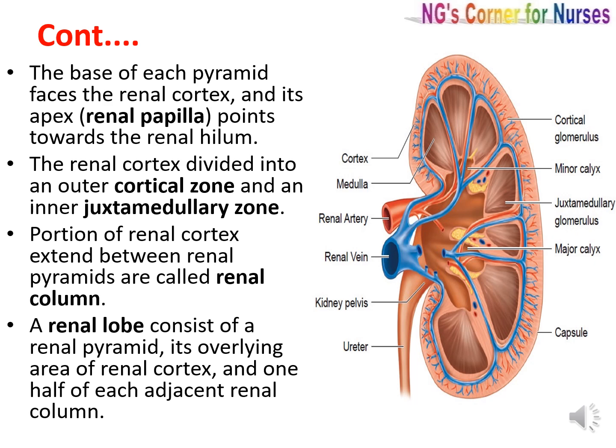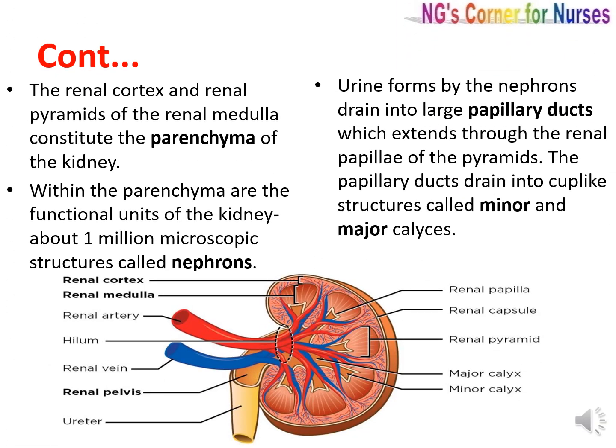A renal lobe consists of a renal pyramid, its overlying area of renal cortex, and one half of each adjacent renal column. The renal cortex and renal pyramids of the renal medulla constitute the parenchyma of the kidney. Within the parenchyma are the functional units of the kidney — about one million microscopic structures called nephrons. Urine formed by the nephrons drains into large papillary ducts, which extend through the renal papilla to the pyramids.